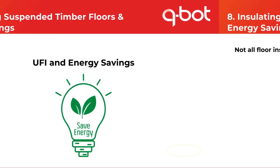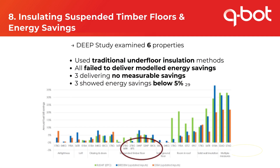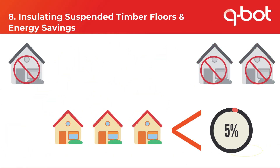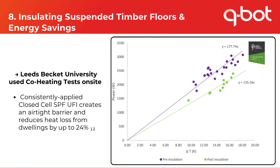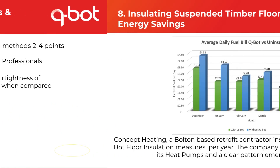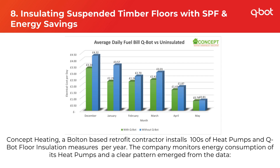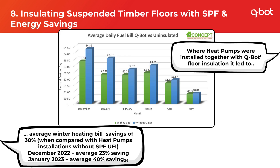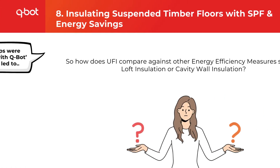According to a study by Leeds Beckett University, traditional floor insulation fails to deliver modelled energy savings — with three installations delivering no measurable saving and others with energy savings below 5%. An earlier Leeds Beckett study validated that closed cell spray foam applied consistently below the floor creating an airtight barrier can reduce heat loss by up to 24%. At present, all floor insulation methods score two to four SAP points of EPC improvement. However, Concept Heating, a Bolton-based retrofit contractor, installs hundreds of heat pumps alongside QBOT floor insulation every year. When the two measures were installed together, it led to an average winter heating bill saving of 30%.